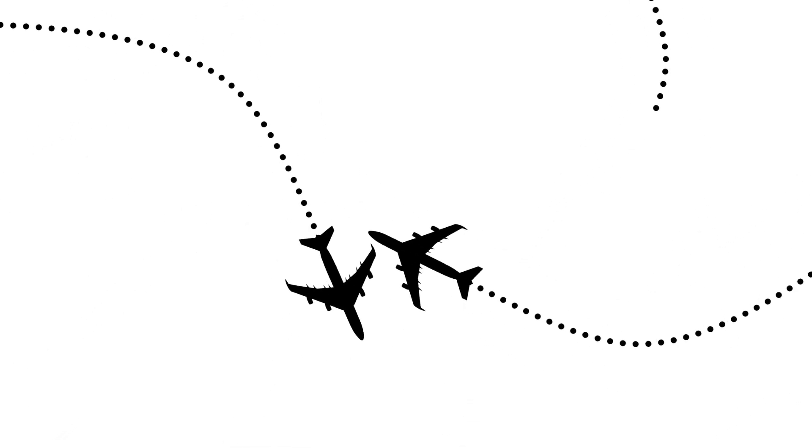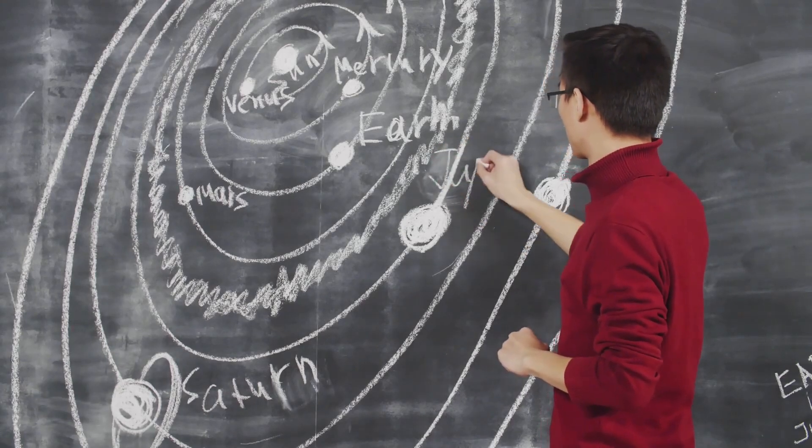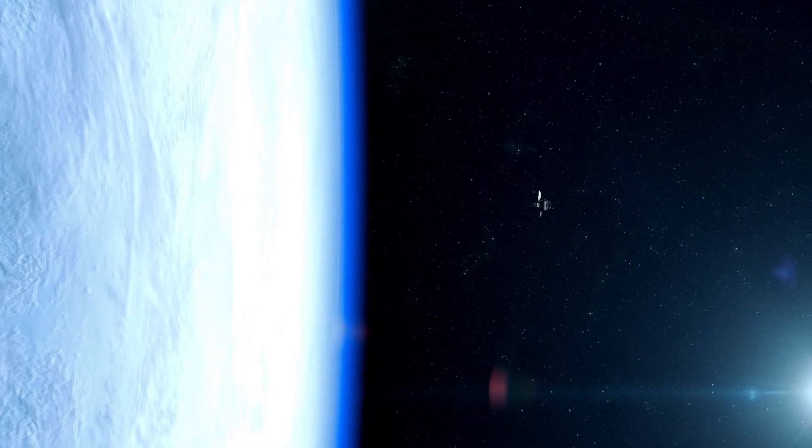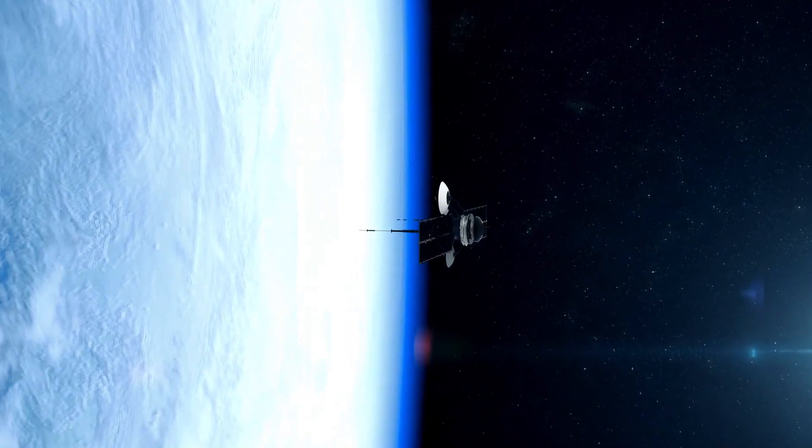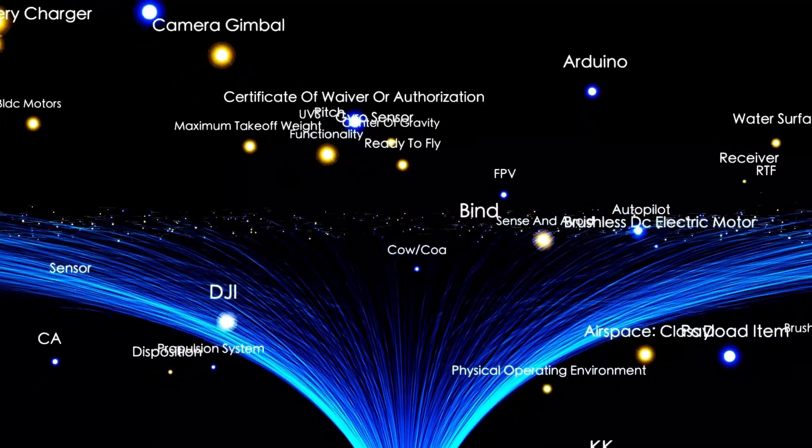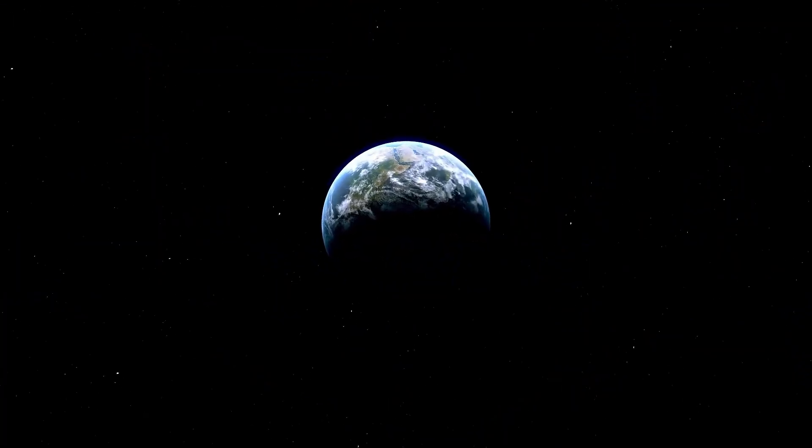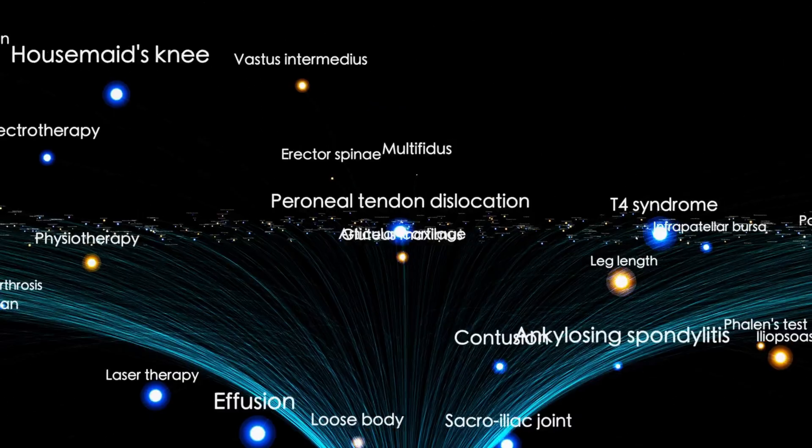One of the most surprising discoveries is the way interstellar space interacts with our solar system. The data suggests that the heliopause, the boundary Voyager crossed in 2012, is not static. It shifts and flexes, influenced by both the sun's activity and external forces from interstellar space.